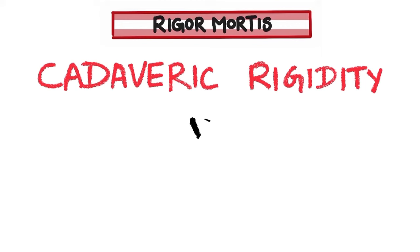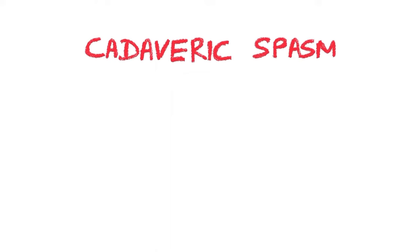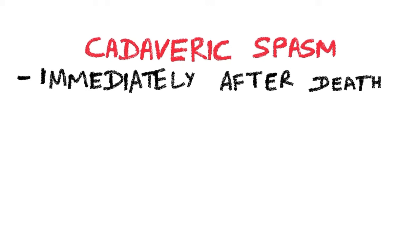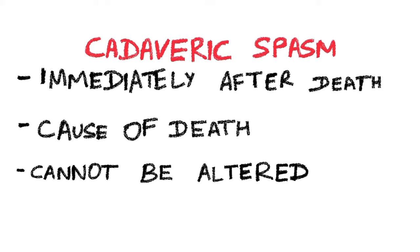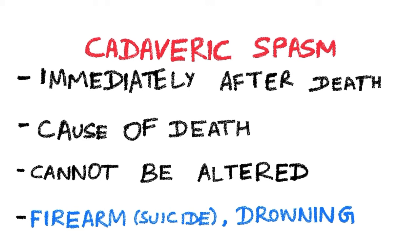Rigor mortis, also known as cadaveric rigidity, is often confused with cadaveric spasm. Cadaveric spasm is a change which happens immediately after death, unlike cadaveric rigidity which develops after some time. Cadaveric spasm can give clues about the cause of death and cannot be altered artificially. It is helpful in identifying suicides by firearms and in cases of drowning.